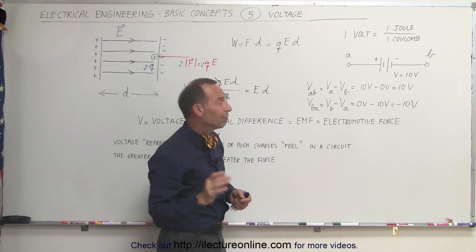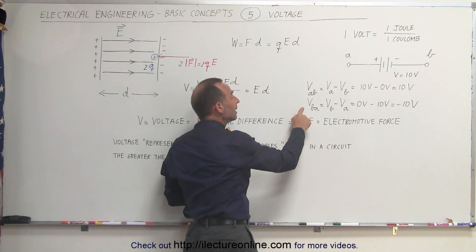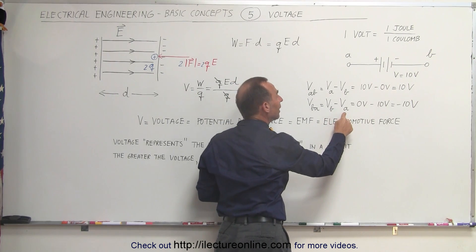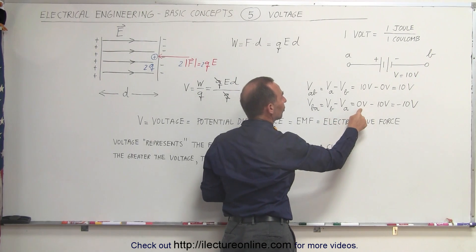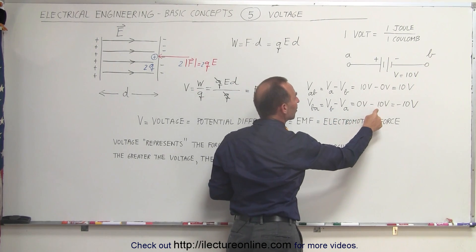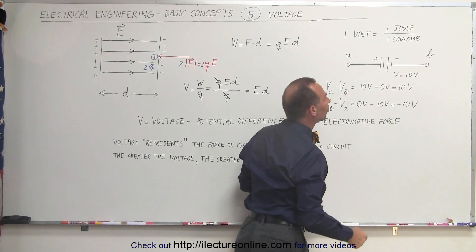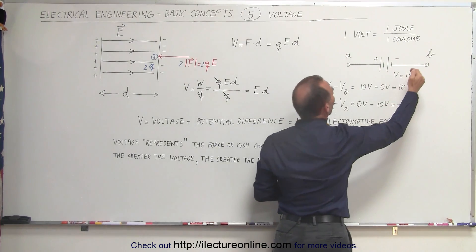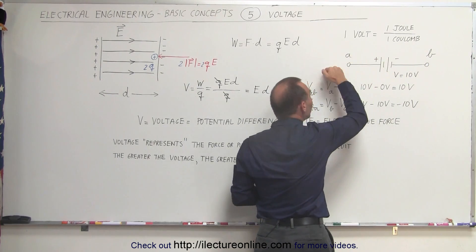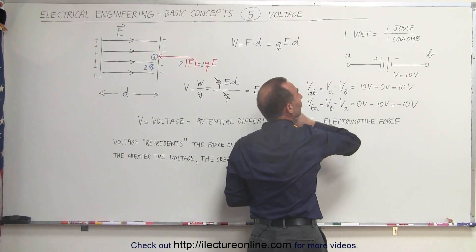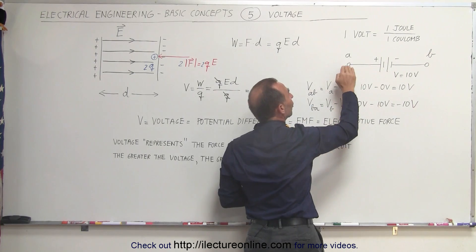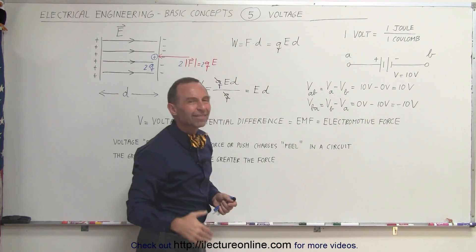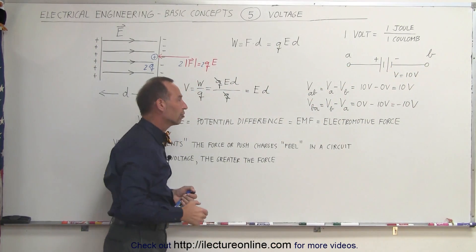But if we talk about VBA, this is equal to V at B minus V at A, which is equal to zero volts minus 10 volts, equal to minus 10 volts. When we go from B to A, we increase in voltage by 10 volts. If we go from A to B, we decrease by 10 volts. That's a negative voltage direction.